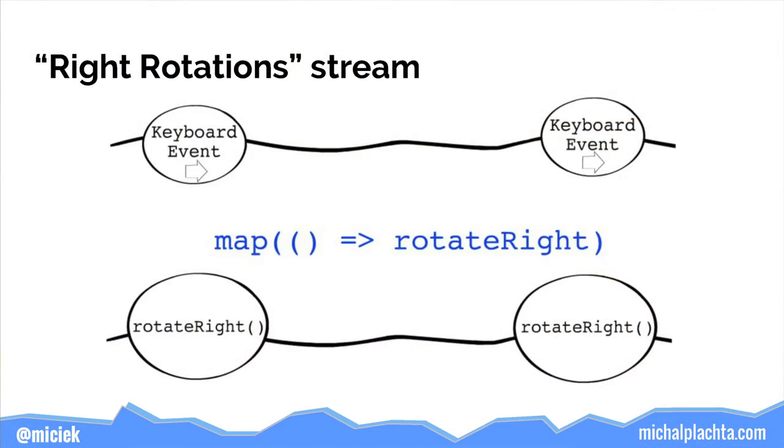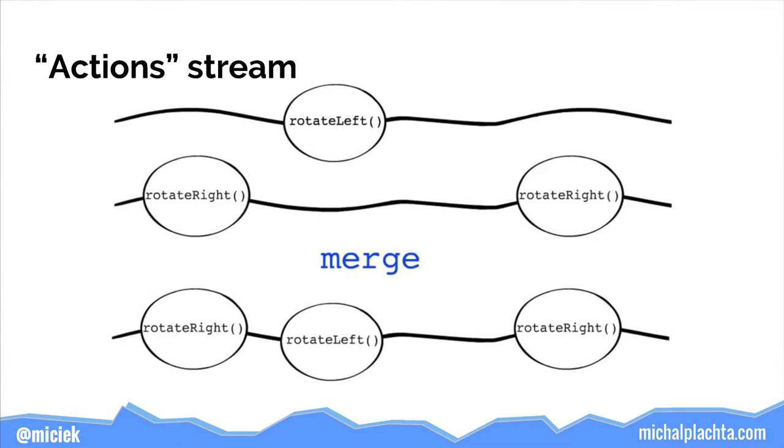Every time the user presses a button, we have a rotate-left function output in the left rotation stream. Similarly for right rotations. We can merge those two streams to get a new one — the action stream — which outputs a value each time either of the two input streams outputs a value. The action stream contains the function needed to transform the current direction whenever the user wants to change it.